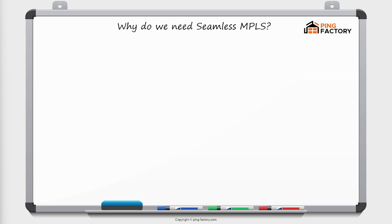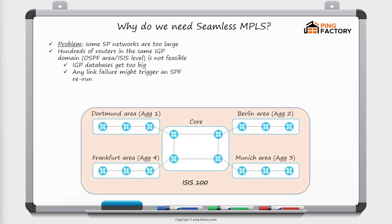So why do we need seamless MPLS? Service provider networks can get really large — we could have hundreds of routers in the same ISP. We can't put all those routers in the same IGP domain, which is an OSPF area or an IS-IS level. There are reasons you wouldn't put hundreds of routers in the same OSPF area. First, the IGP databases would get too big — each router advertises its own router LSA, so with 300 routers in the same area, you'd have 300 router LSAs in the IGP database.